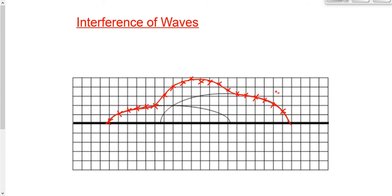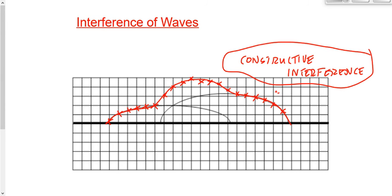At this instant in time, you wouldn't see the two original waves — you'd see one bigger wave. Because it's a bigger wave, we call it constructive interference. The same thing applies if you flip it over and have two troughs — that's still constructive interference, because you're still building a bigger wave. When you dig a hole, you're constructing a hole. Constructive interference applies to both two crests and two troughs.